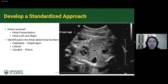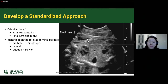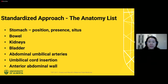Developing your standardized approach: first, orient yourself — what is the fetal presentation, and what are the fetal left and right sides? Identify your fetal abdominal borders, starting with the cephalad side, the diaphragm, lateral edges, and the caudal portion with the pelvis. The anatomy checklist includes the fetal stomach position, presence, situs, bowel, kidneys, bladder, abdominal umbilical arteries, cord insertion, and the anterior abdominal wall.